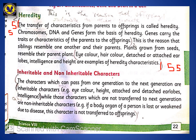Characters which can pass from one generation to the next generation are called inheritable characters. For example, eye color, height, and attached or detached ear lobes, and intelligence. While those characters which are not transferred to the next generation are called non-inheritable characters. For example, if a body organ of a person is lost or weakened due to disease, this character is not transferred to offspring.